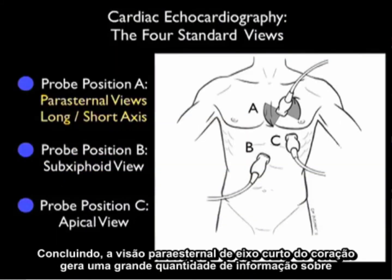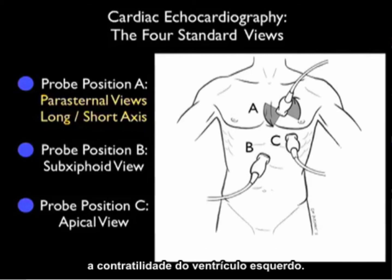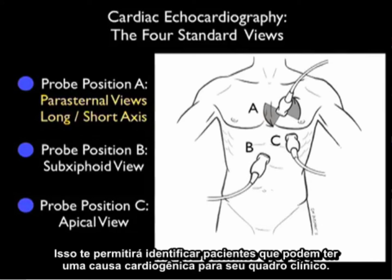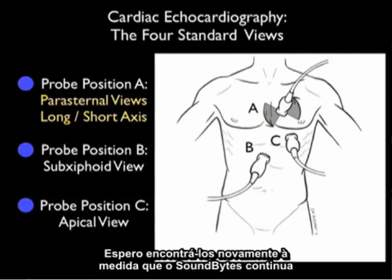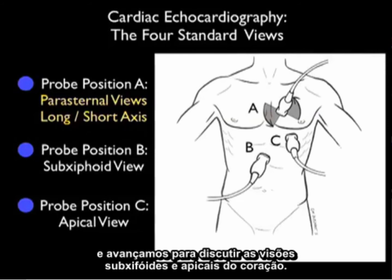In conclusion, the parasternal short axis view of the heart gives a great deal of information about the contractility of the left ventricle. This will allow you to identify patients who may have a cardiogenic cause for their presentation. I hope to see you back as SoundBytes continues, and we move on to discuss the subxiphoid views and apical views of the heart.